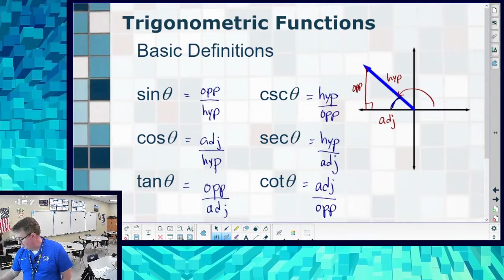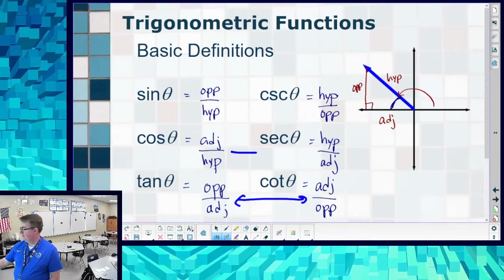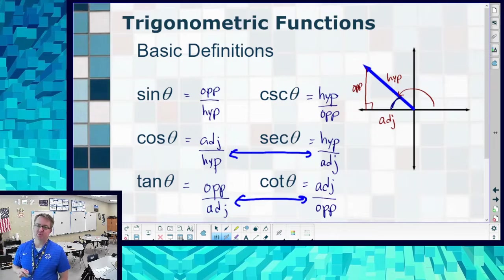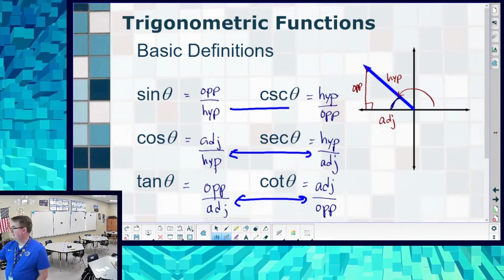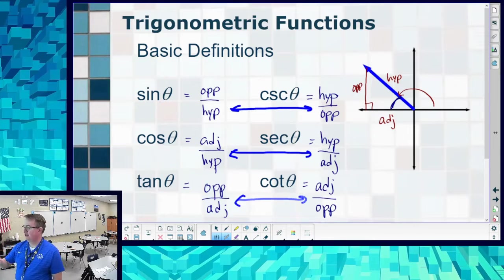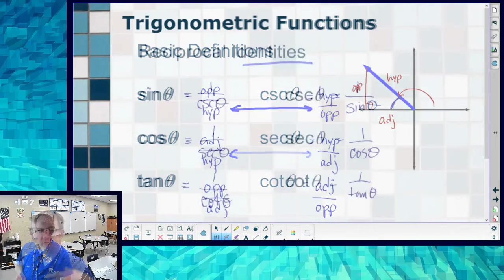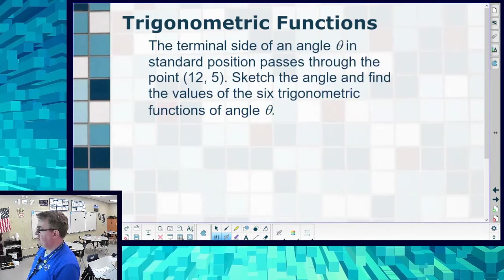Tangent and cotangent are reciprocals of each other. Cosecant and secant are reciprocals of each other. Sine and cosecant are going to be reciprocals of each other. We'll see that later.